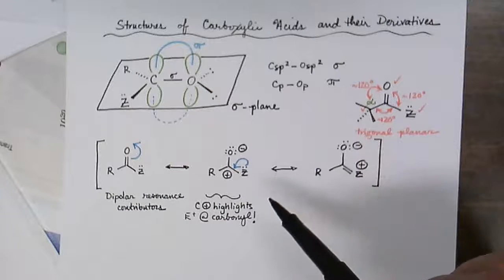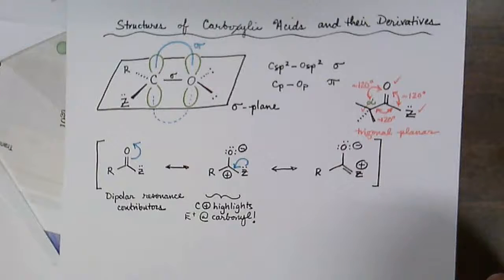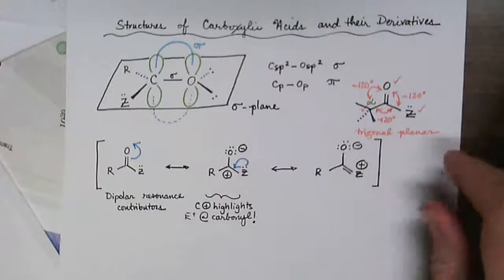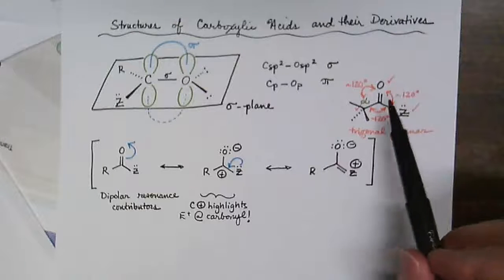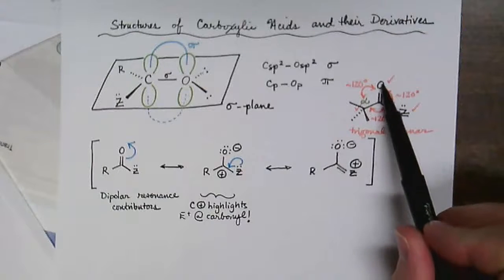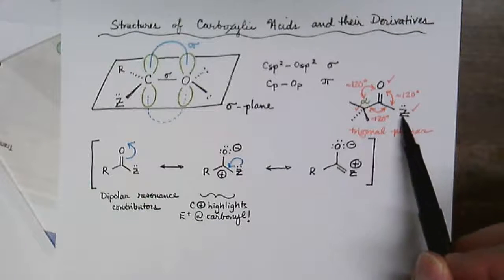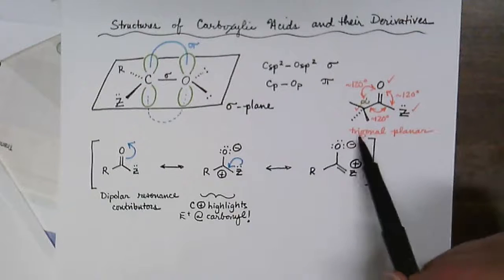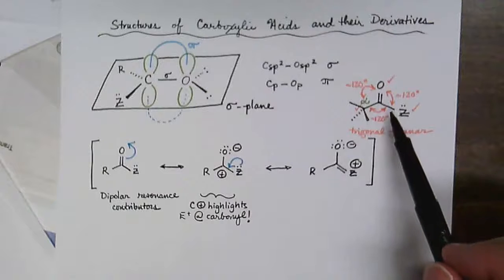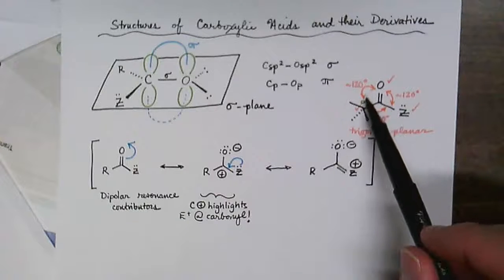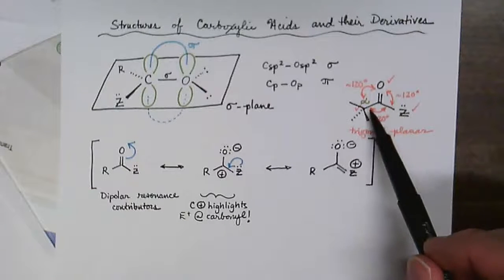Now in terms of the structure of a carboxylic acid and their derivatives, we would say that the carbonyl along with the oxygen, alpha carbon, and the Z group align the same plane—that is to say that they are trigonal planar. The carbonyl has trigonal planar molecular geometry with approximate bond angles of around 120 degrees.